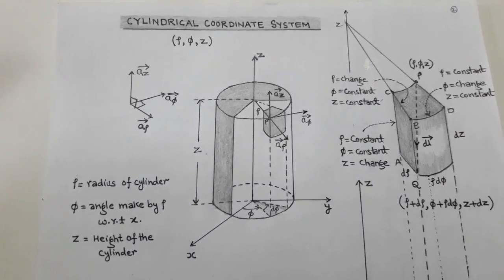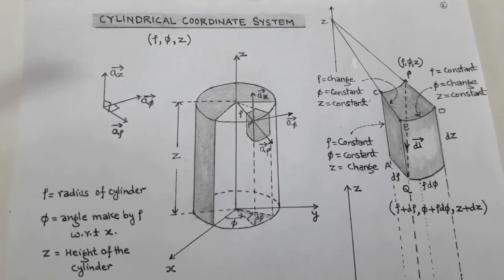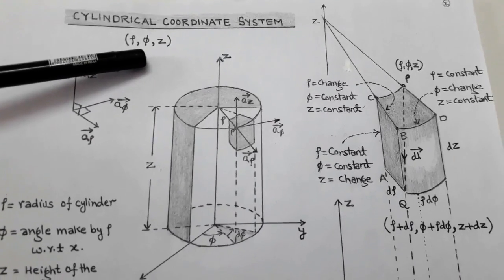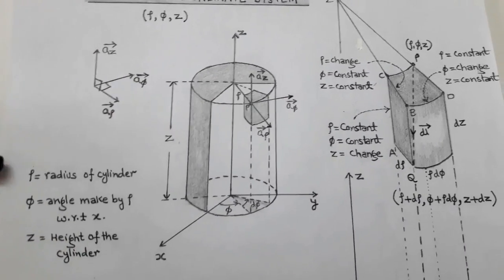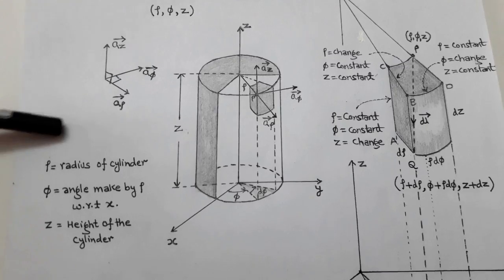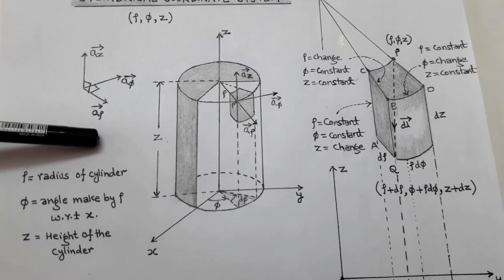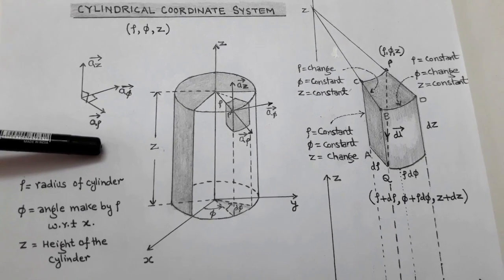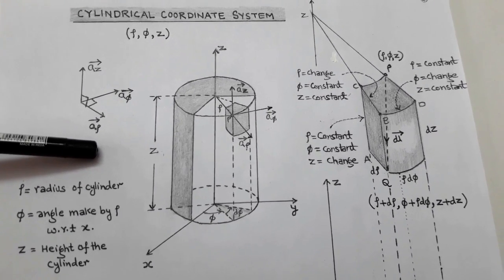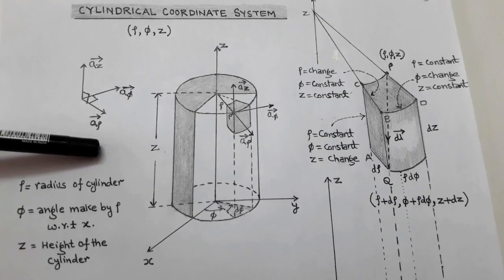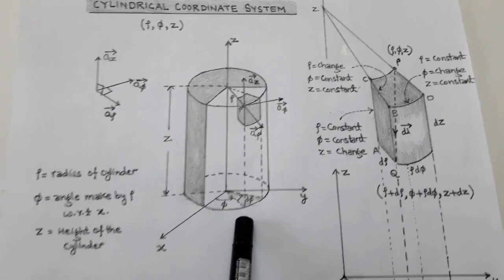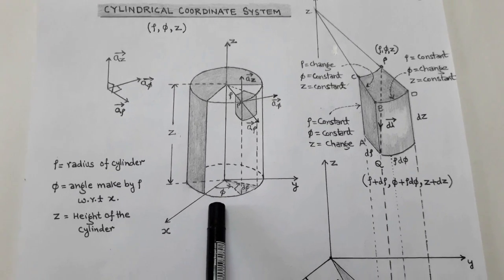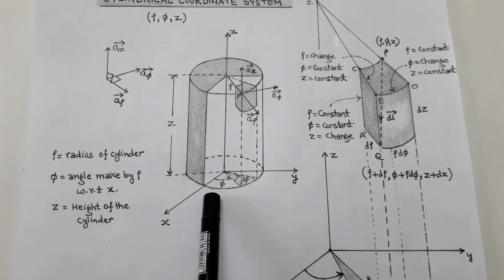The cylindrical coordinate system has coordinates rho, phi, and z. Rho is the radius of the cylinder, phi is the angle made by rho with respect to the x-axis, and z is called the height of the cylinder. In this coordinate system, we consider a cylinder whose base is situated on the xy-plane and which has some height z.